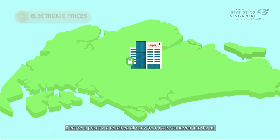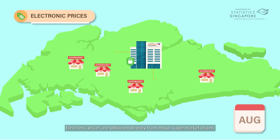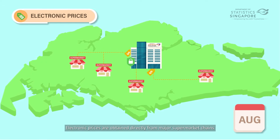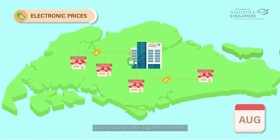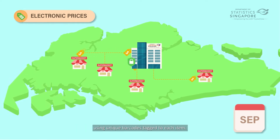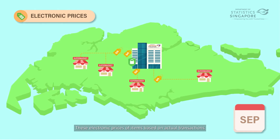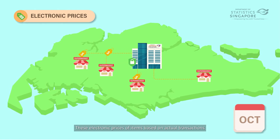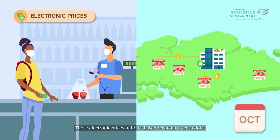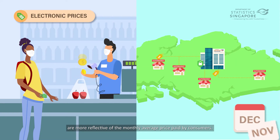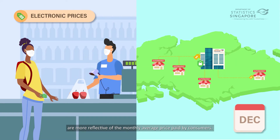Electronic prices are obtained directly from major supermarket chains using unique barcodes tagged to each item. These electronic prices of items, based on actual transactions, are more reflective of the monthly average price paid by consumers.